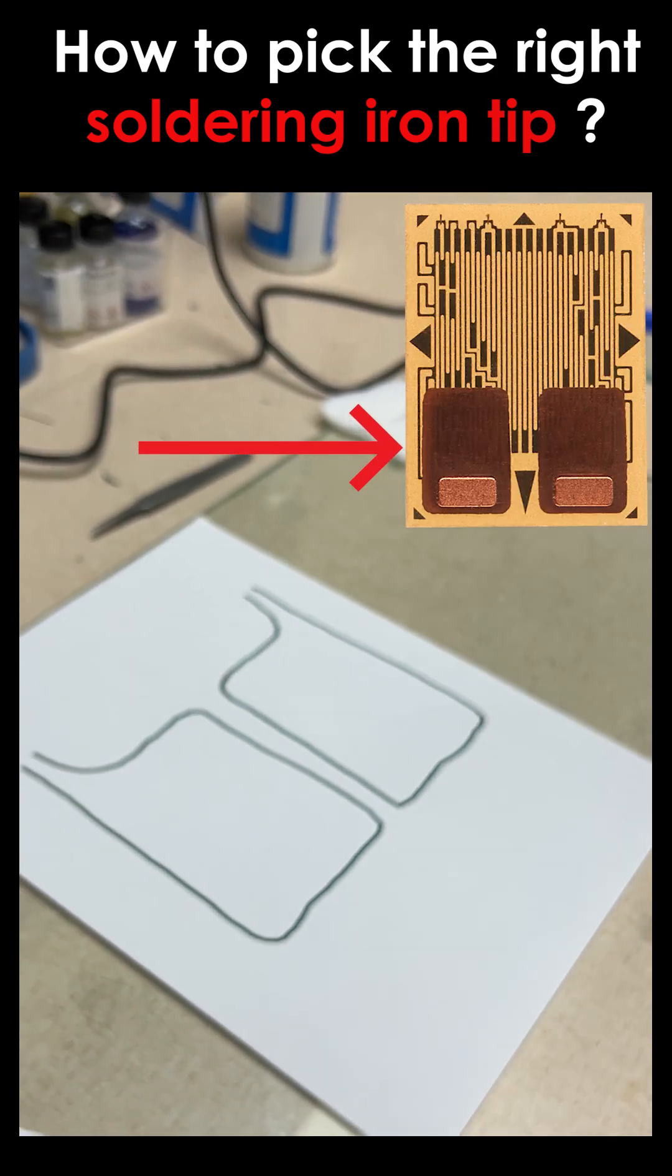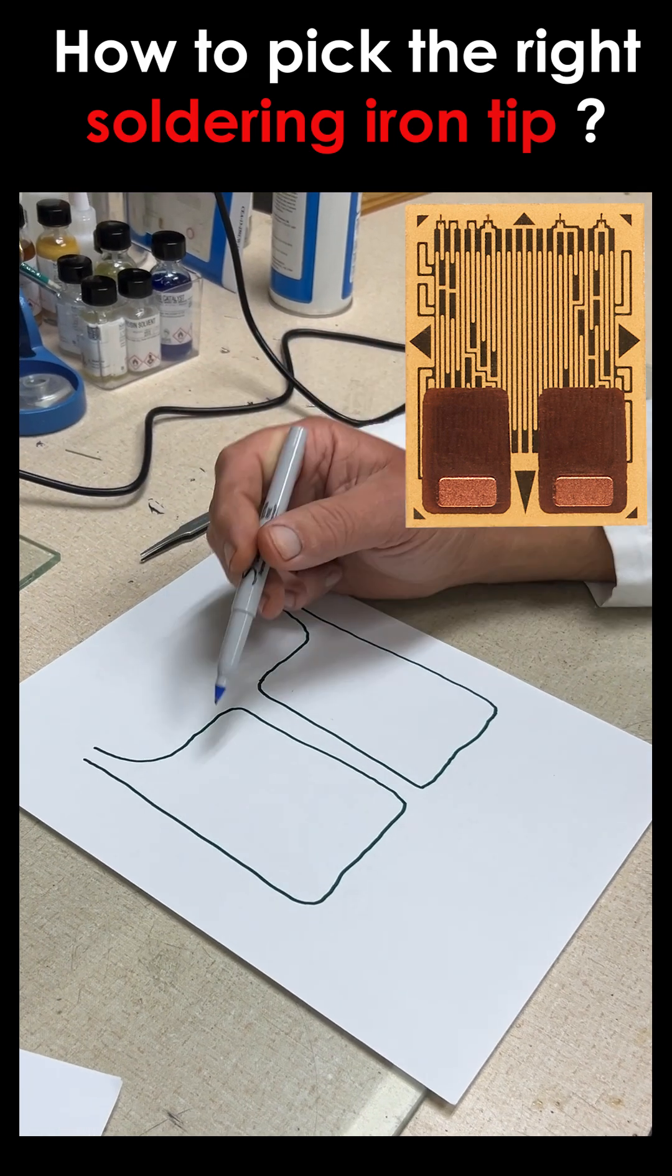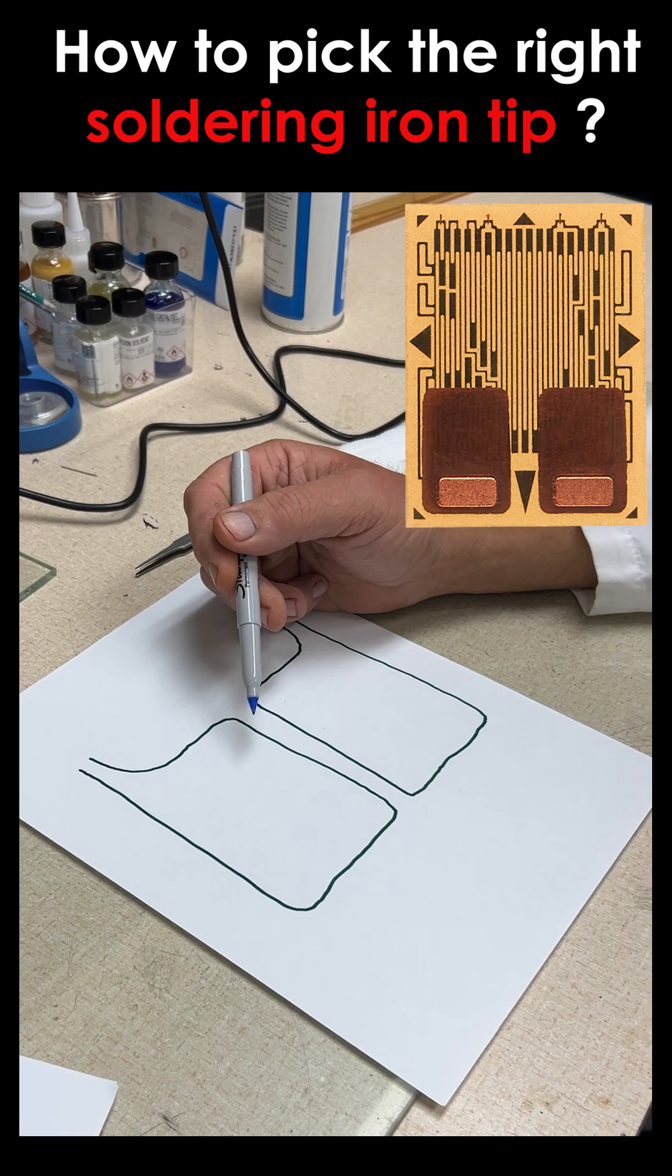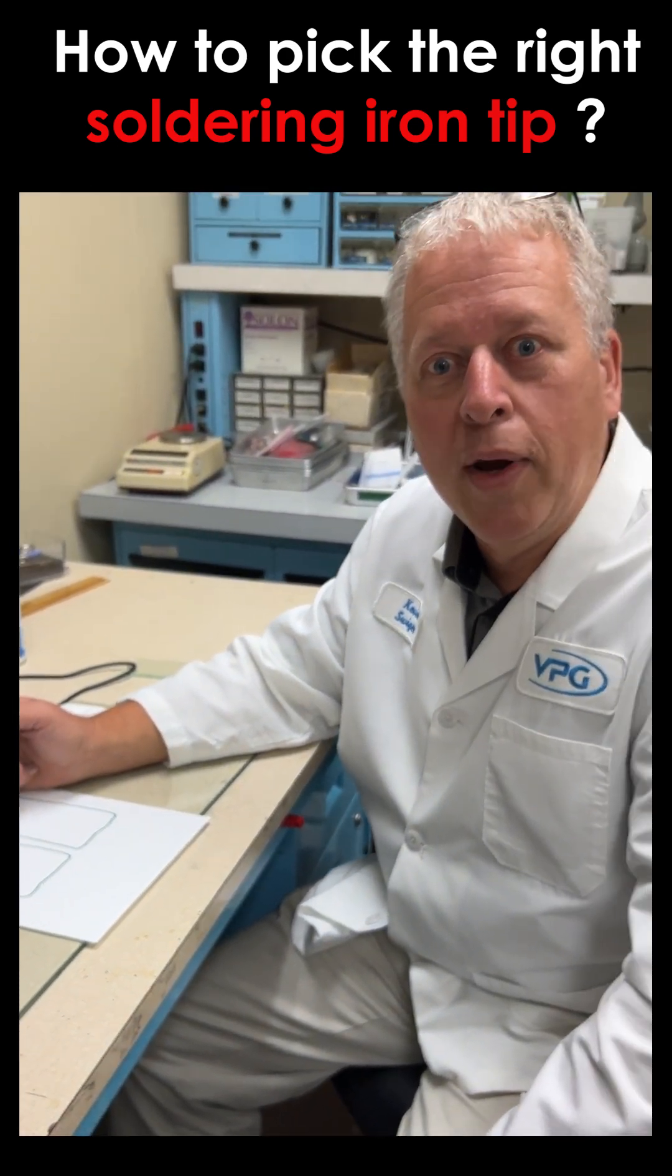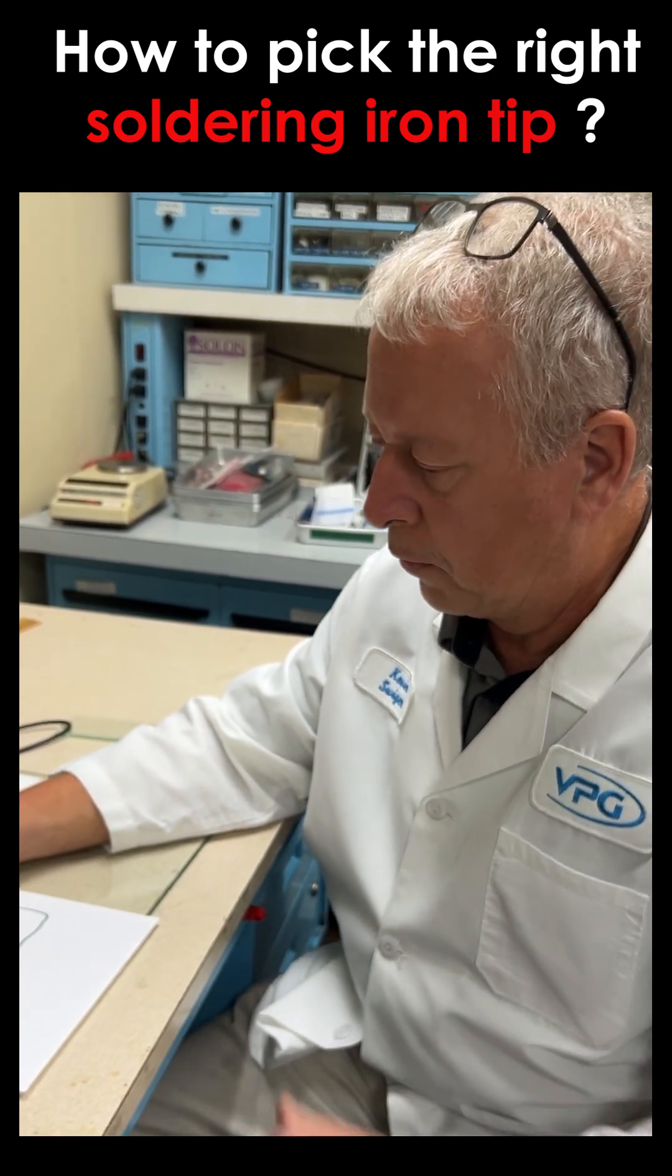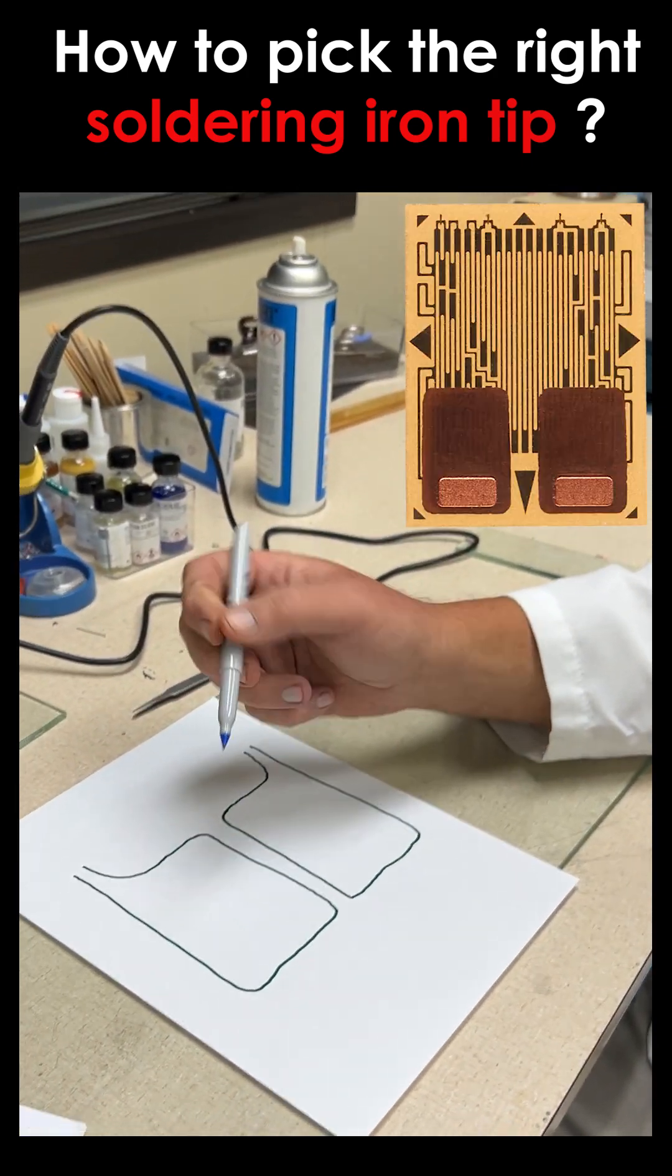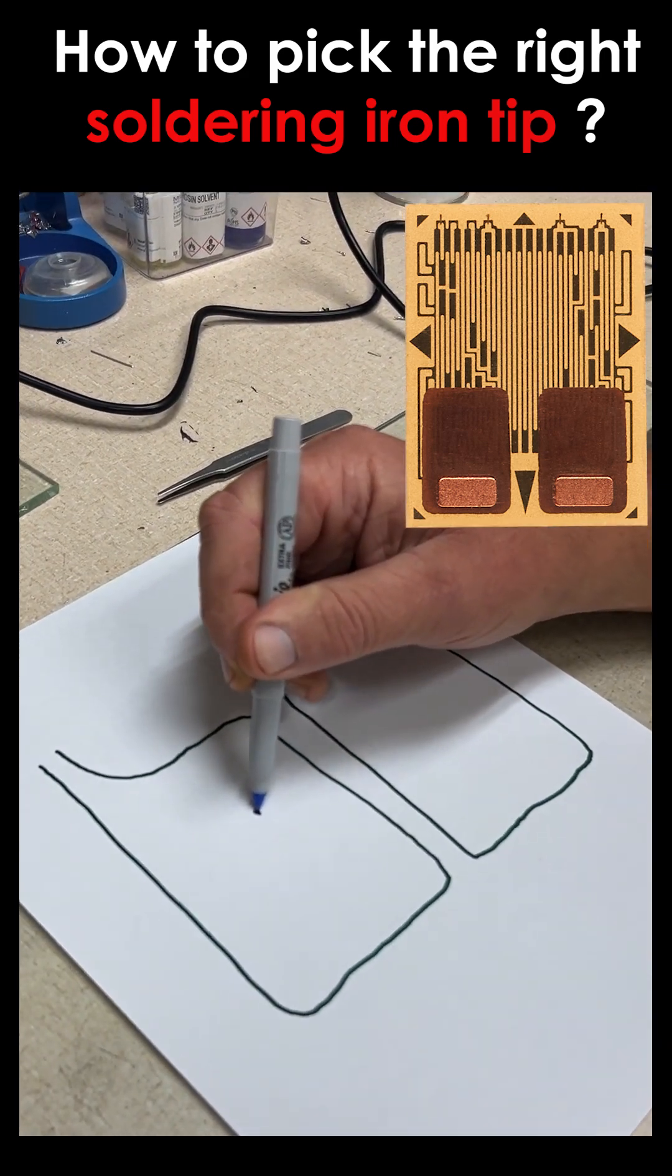So imagine that these are the two strain gauge tabs that we just looked at. Now, when people begin strain gauge soldering, their first inclination is to use a very tiny, sharp-pointed tip. And here's what can happen when you go down that road. Let's say this Sharpie pin is a sharp-pointed tip, and I touch the foil here at this surface right there. Point contact.